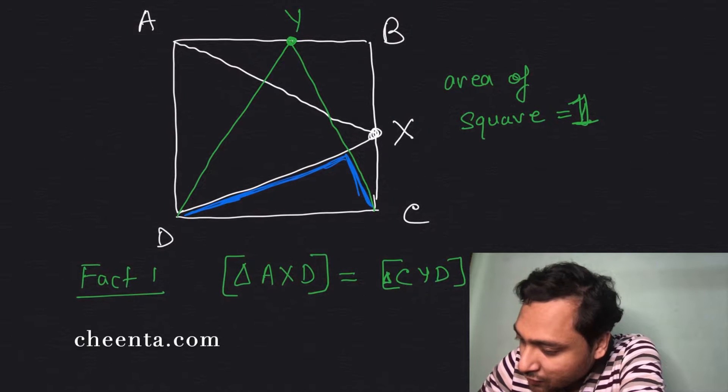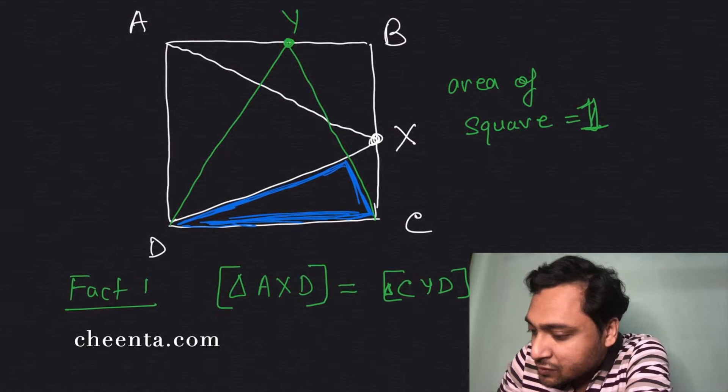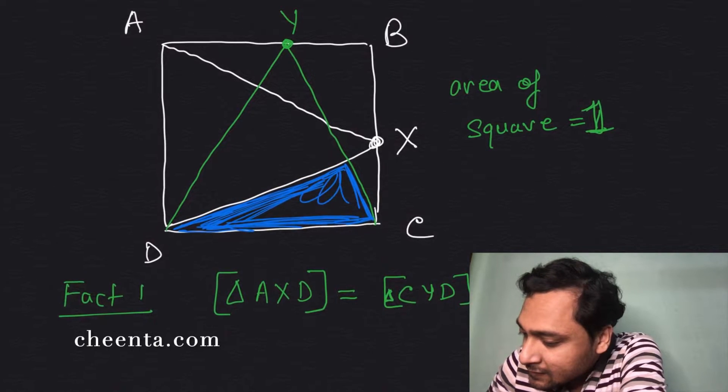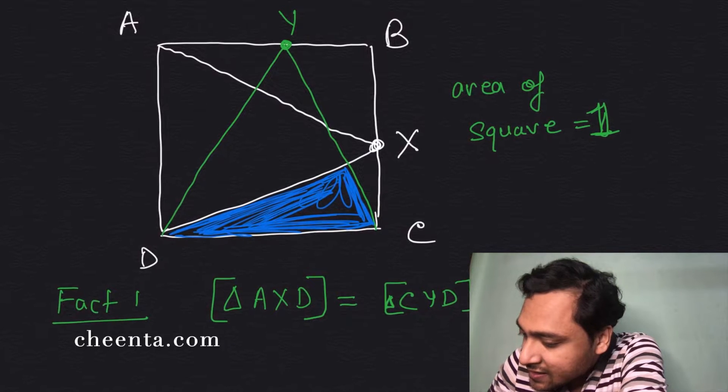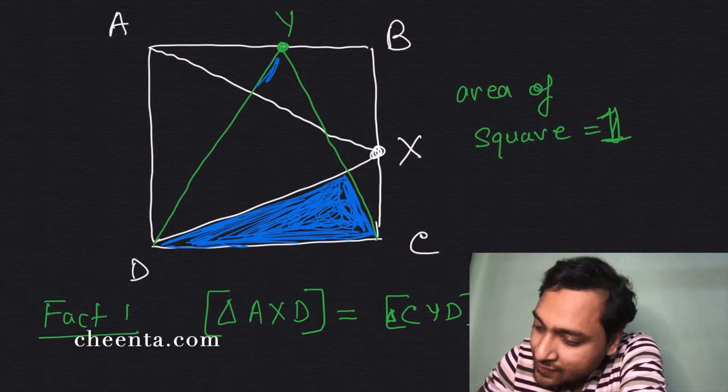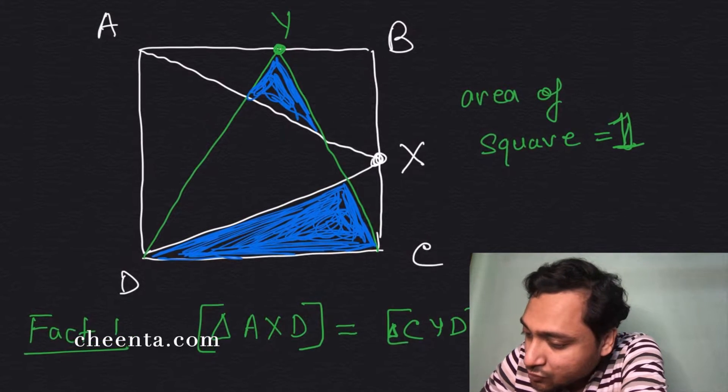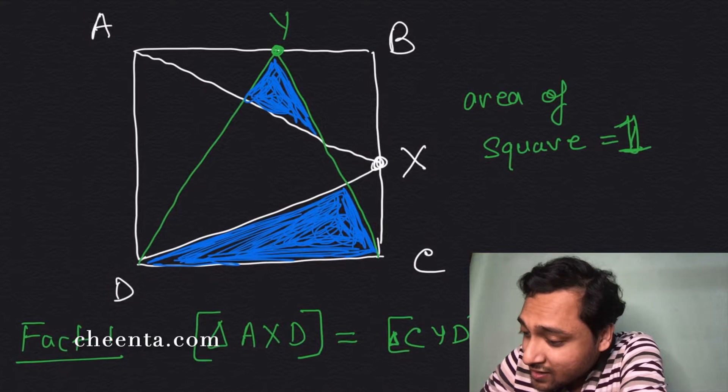Okay, alright, so now we will be shading two regions in this square. So one region is blue. Let's say a region is blue. And this one is also a blue region, so I will just color them both as blue.